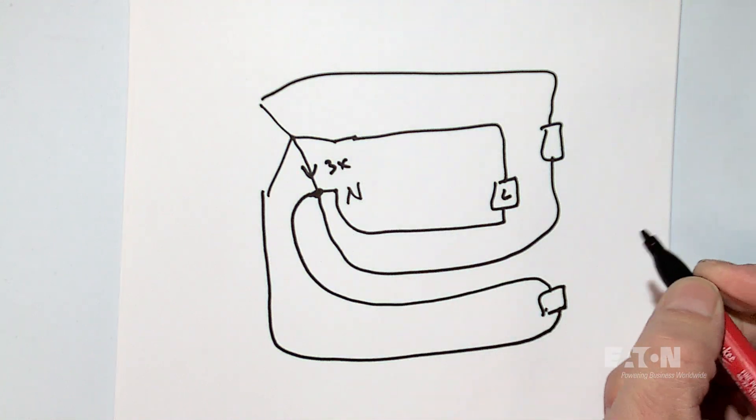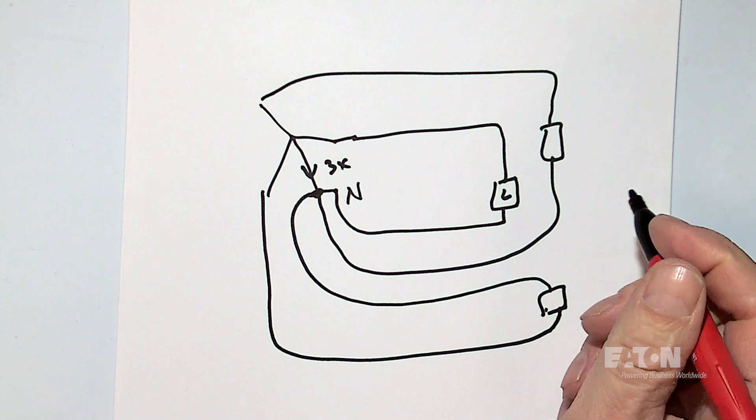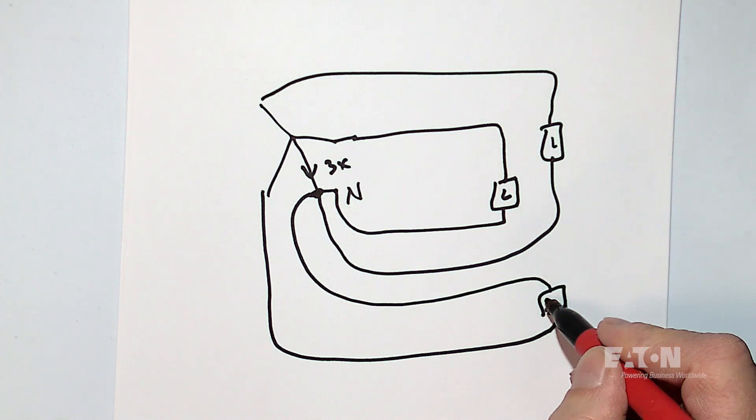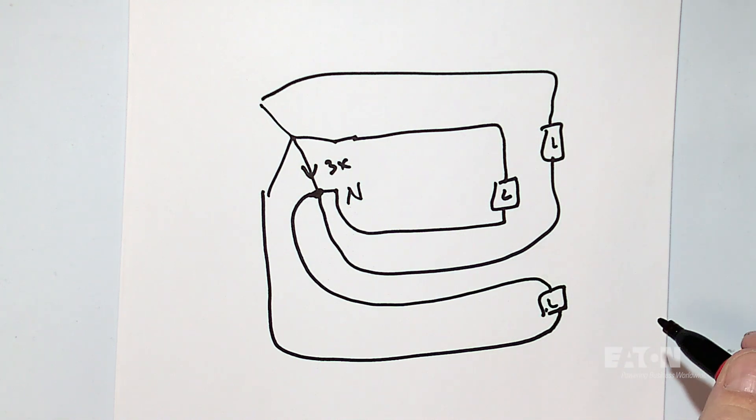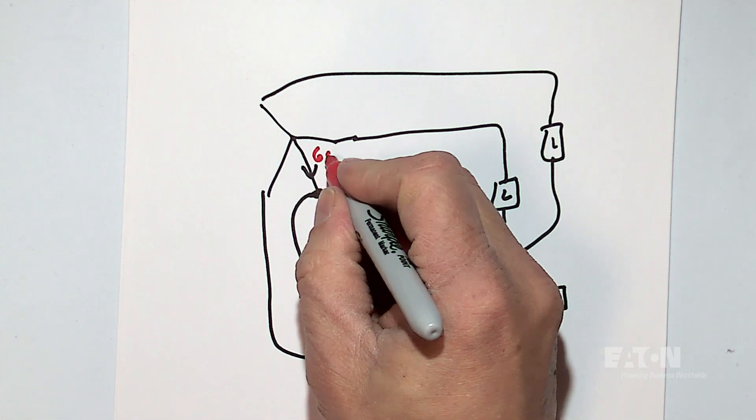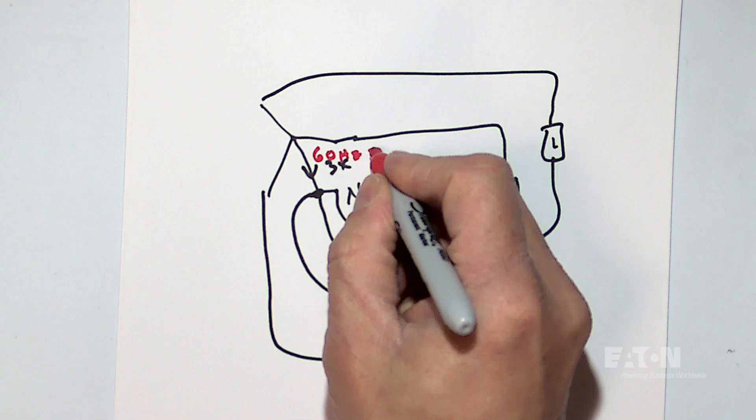So in this part here, we could have 3x the third harmonic current. But again, if my phase A, my phase B, and my phase C loads are all equal, my 60 hertz part here, 60 hertz equals zero.